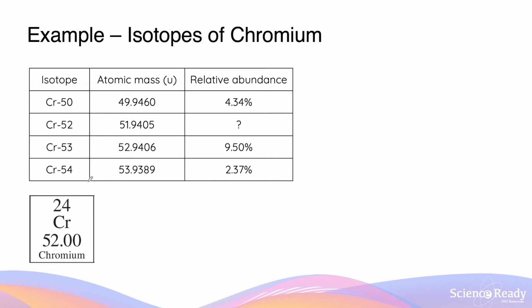In some cases, you might be asked to calculate the relative abundance of one of the isotopes, given the actual relative atomic mass from the periodic table. In this instance, we are required to calculate the relative abundance of the chromium-52 isotope, and we know that the relative atomic mass of chromium is 52.00.